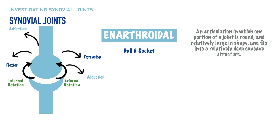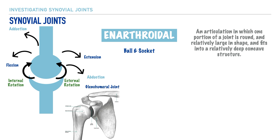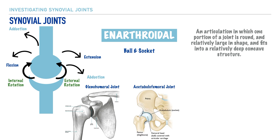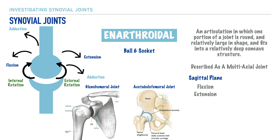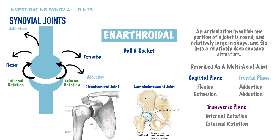Two key examples of ball and socket joints are the shoulder joint — the glenohumeral joint — where the humeral head is the large rounded structure and the glenoid fossa is the deep concave component, and the hip — the acetabulofemoral joint — where the head of the femur is the rounded structure and the acetabulum is the deep concave component. Inarthroidal joints are classified as multi-axial, allowing movement in all three planes: flexion and extension in the sagittal plane, abduction and adduction in the frontal plane, and internal and external rotation in the transverse plane.